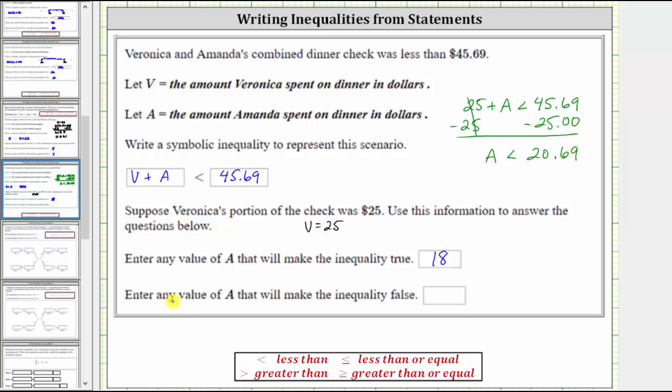The last part of the question, enter any value of A that will make the inequality false. The inequality is false when A is not less than 20.69, which means A would have to be greater than or equal to 20.69. So let's just say when A equals 22,